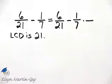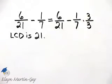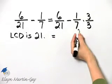what do I multiply seven by in order to have a product of 21? I multiply seven by three so I will multiply by three over three so that I'm multiplying by one and not changing the value of the fraction.